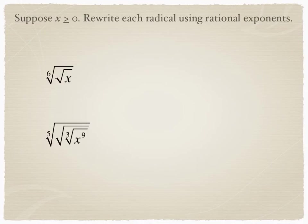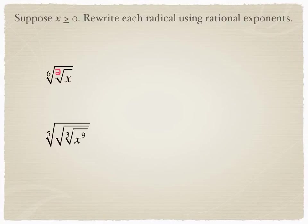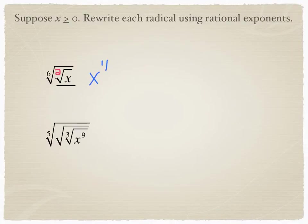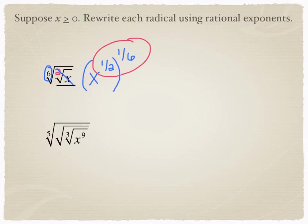One last thing that looks scarier than it really is: rewrite each radical using rational exponents, meaning write it as x to the power of something. With these radicals, remember that if it doesn't have a number right there, it's really a square root, so the number that should be there is a 2. That's hard for students because you're used to knowing that when something's not written, it's a 1 — but with square roots, there's no such thing as a first root, so when it's not written, it's a 2. If I took just the square root of x and wrote it as an exponent, that would be x to the power of 1 half. Then I've got the 6th root, which is the same as a power of 1 sixth. Combine those fractions by multiplying, and this becomes x to the power of 1 over 12.